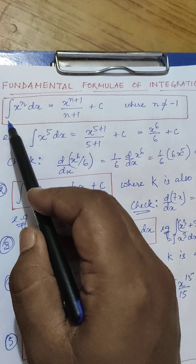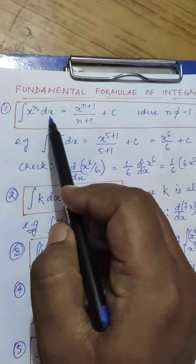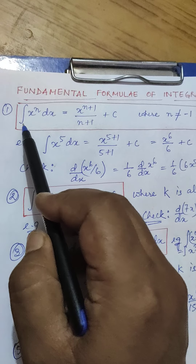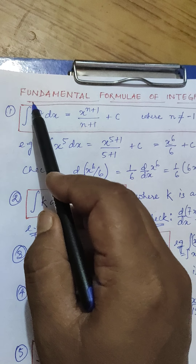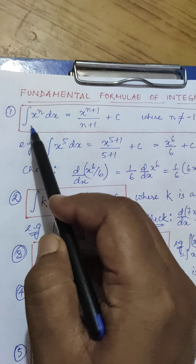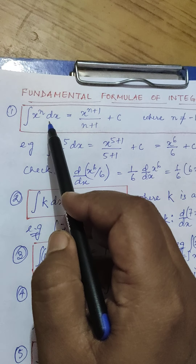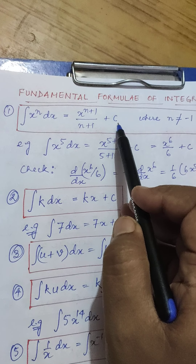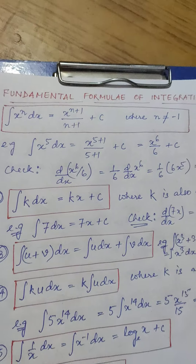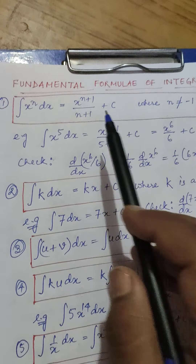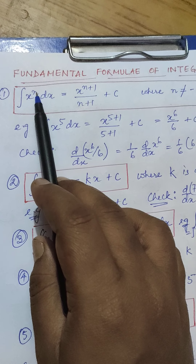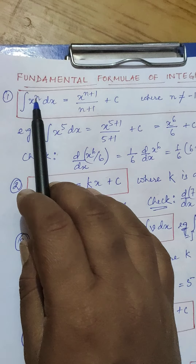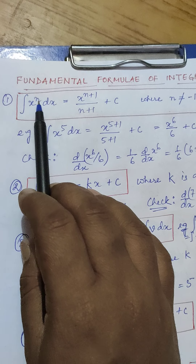In definite integrations, there will be limits of x — the lower limit and upper limit are written on the integral sign. If nothing is written there, it means it is an indefinite integration, and the result will always have a constant quantity. The condition here is that n can have any integer value, but it should not be minus 1.